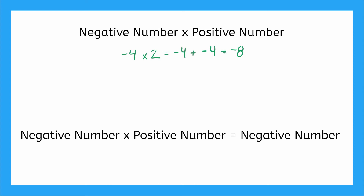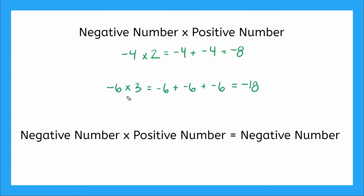Let's double check it with some new numbers. What if I have negative six times three? It's saying add negative six together three times: negative six plus negative six plus negative six. And if I add these together, we get negative 18. So this still follows our rule — a negative times a positive equals a negative number. This will always be the case when we multiply a negative by a positive.